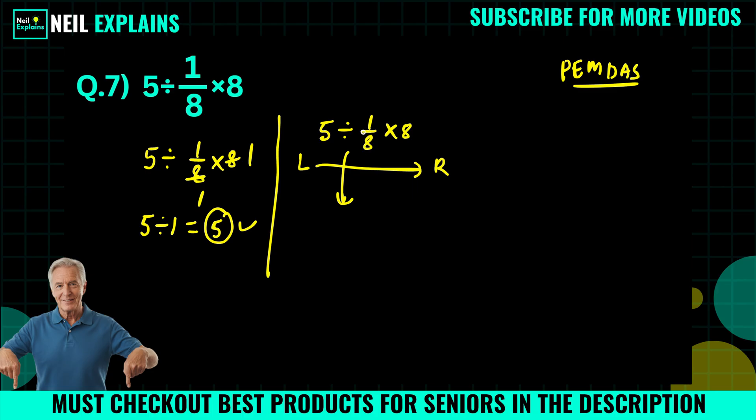The math procedure here is the KCF, so we will use KCF. KCF stands for Keep Change Flip. So we will keep this 5 as it is, division is changed to multiplication, and 1/8 will be 8/1.